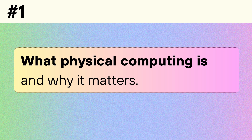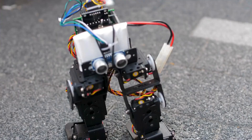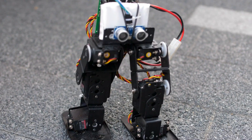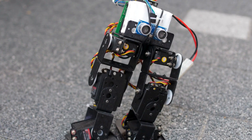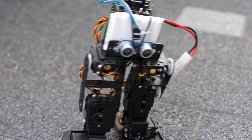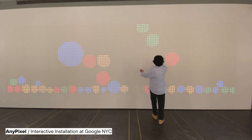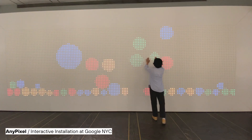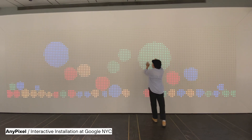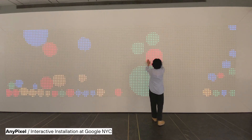What is physical computing? Physical computing is about designing systems that interact with the physical world through code. You might have heard of the terms Internet of Things, Robotics, or Interactive Art Installations, and these are all examples of physical computing.